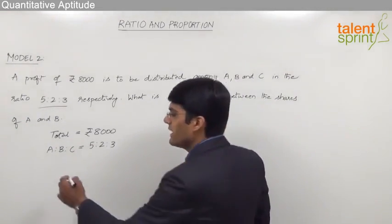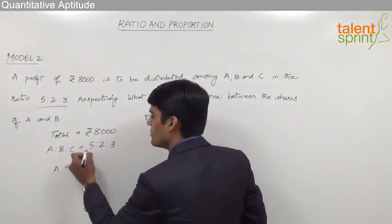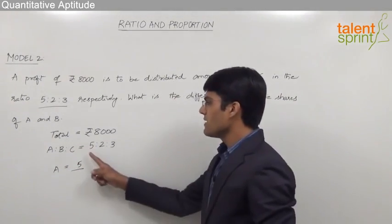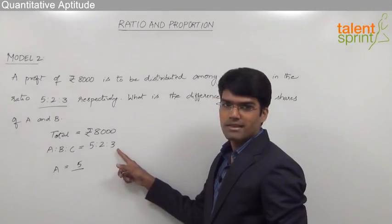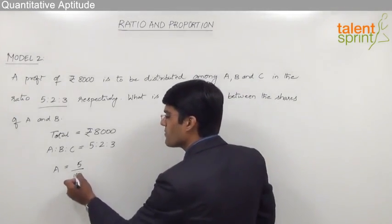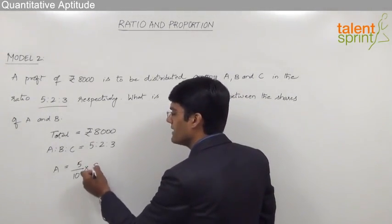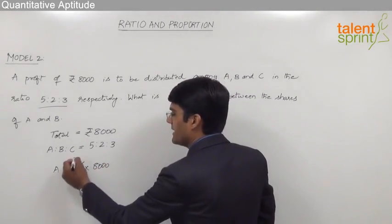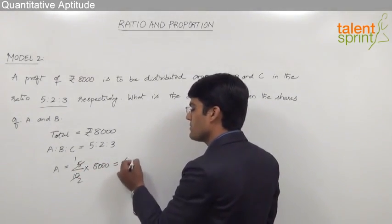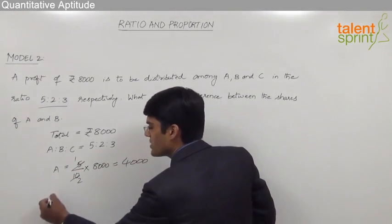A's share will be equal to 5 parts out of 5 plus 2 plus 3, which is 10. 5 parts out of 10 parts multiplied by the total value of 8000 comes out to be 4000 rupees and B's share.